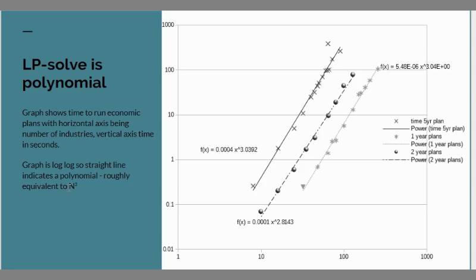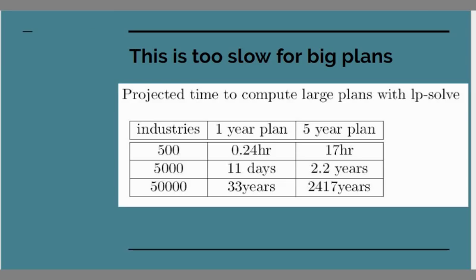So lpsolve, when applied to economic planning, has complexity n to the three, n cubed. That doesn't sound too bad because I mean our times here are only going up to 100 seconds, that's quite tractable, and that's a tiny wee PC, a tiny wee Odroid chip which is about the same scale as a Raspberry Pi, so it's not a powerful computer, but if we start applying this to larger plans it rapidly becomes intractable.